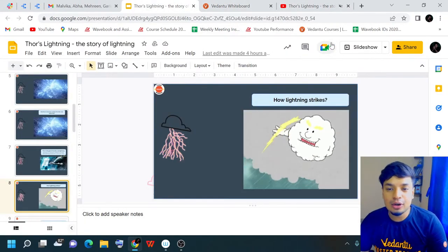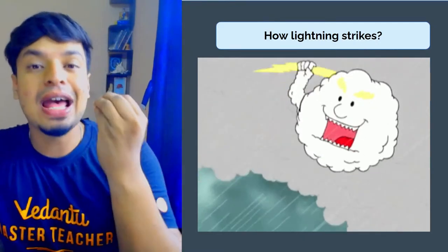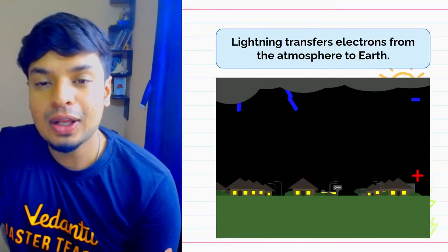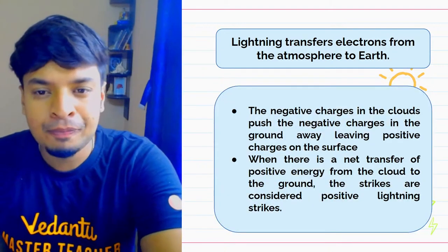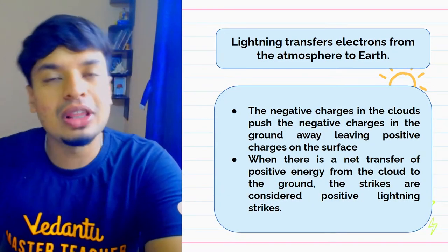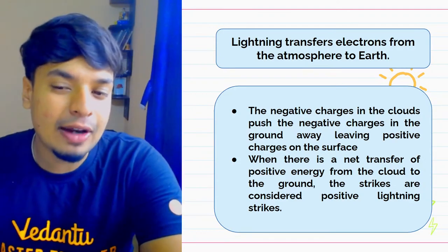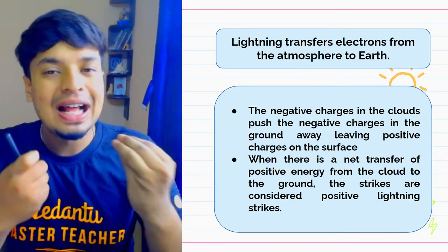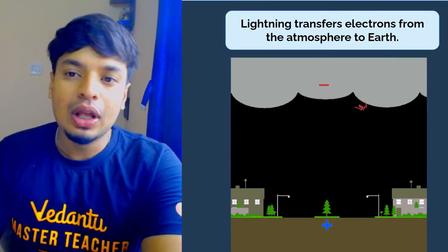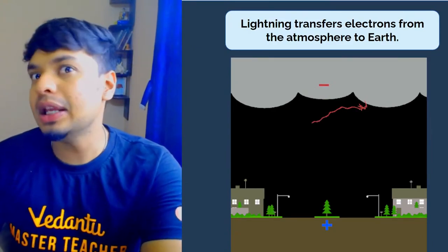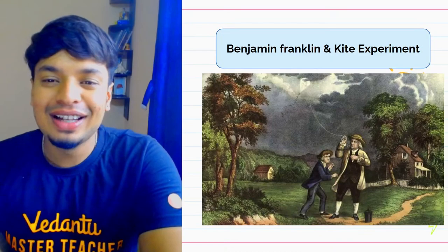Now, one interesting person told us that lightning is actually electricity. We all know that lightning is nothing but the transfer of electrons from the atmosphere to the earth. The negative charges in the cloud push away all negative charges in the ground, leaving only positive charges. When there is a net transfer of charge from the cloud to the ground, that is when lightning strikes. This gif shows it — though it's slowed down.